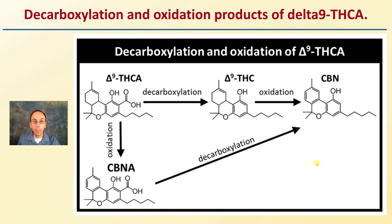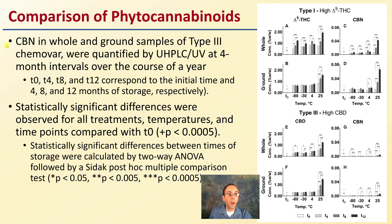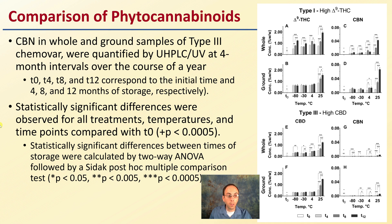Getting into some of the complexities of the chemical pathways, let's compare our phytocannabinoids. This looks at CBN in whole and ground samples of type 3 chemovar, quantified by UHPLC and UV at four-month intervals over the course of a year. When we see T0, T4, T8, and T12, those correspond with the initial time and four, eight, and 12 months of storage respectively. Statistically significant differences were observed in all treatments, temperatures, and time points compared to T0.